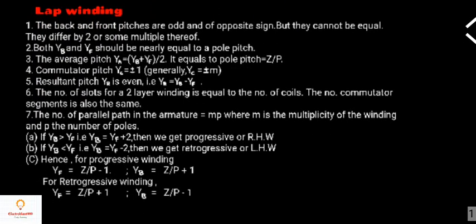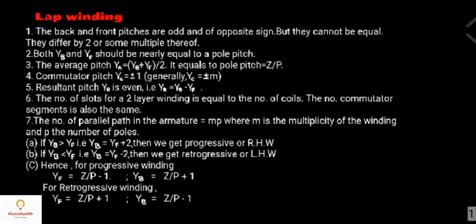There are some important points to keep in mind while doing a lap winding. The back pitch and the front pitch are odd and of opposite sign, but they cannot be equal — they differ by two or some multiple thereof. Both back pitch and front pitch should be nearly equal. The average pitch Ya equals back pitch plus front pitch divided by 2, which equals the pole pitch, given by the number of conductors per pole. Commutator pitch Yc equals plus or minus 1, and generally commutator pitch equals plus or minus m.